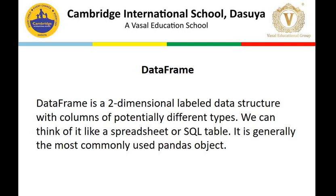Today we will focus on the data frame. Series is one-dimensional; a data frame is two-dimensional. A data frame is a two-dimensional labeled data structure with columns of potentially different types, because in real life we don't find all columns of the same type. For example, a student table has student name of character type and fees of numeric type. We can think of it like a spreadsheet — similar to Excel or a SQL table.